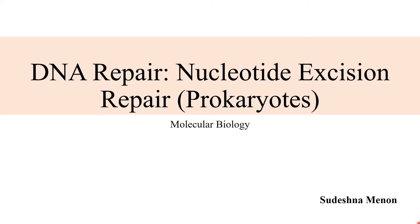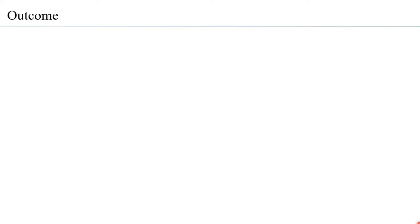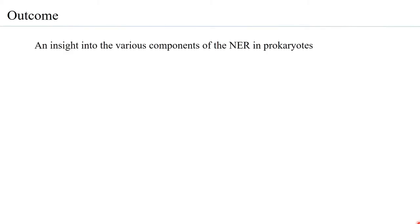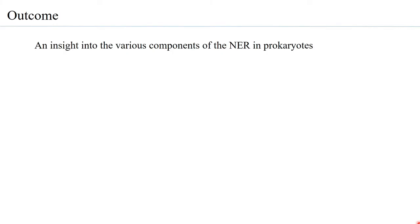In this section the focus is going to be on the prokaryotic nucleotide excision repair, where the molecules involved in the process are going to be discussed and the overall mechanism is going to be understood. The learning outcomes include gaining insight into the various components of the NER mechanism in prokaryotes. The mechanism identifies a damaged nucleotide or lesion, verifies the damage, and then marks it for repair.